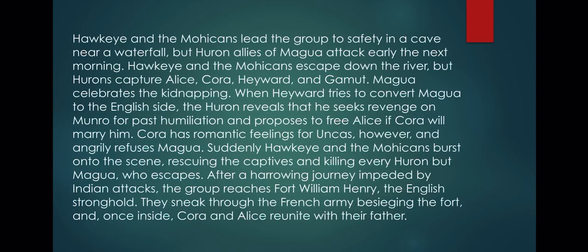The Hurons capture Alice, Cora, Howard, and Gamet. Magwa celebrates the kidnapping, and when Howard tries to convert Magwa to the English side, the Huron reveals he seeks revenge on Monroe for past humiliation, and proposes to free Alice if Cora will marry him. Cora has a romantic feeling for Uncas and angrily refuses Magwa. Suddenly Hawkeye and the Mohicans burst in, rescuing the captives and killing every Huron but Magwa, who escapes.